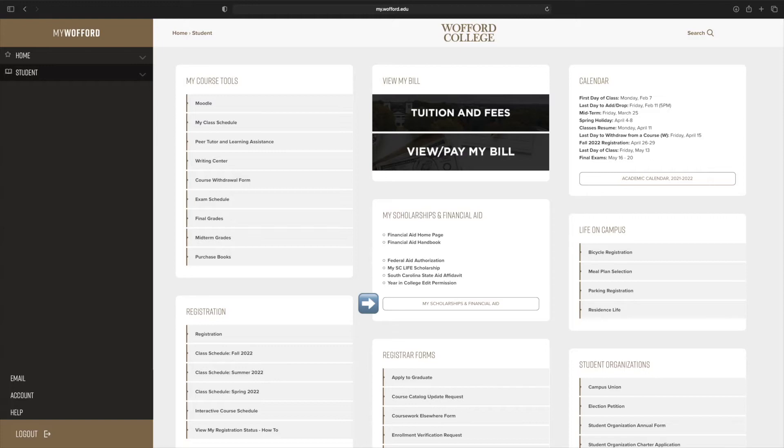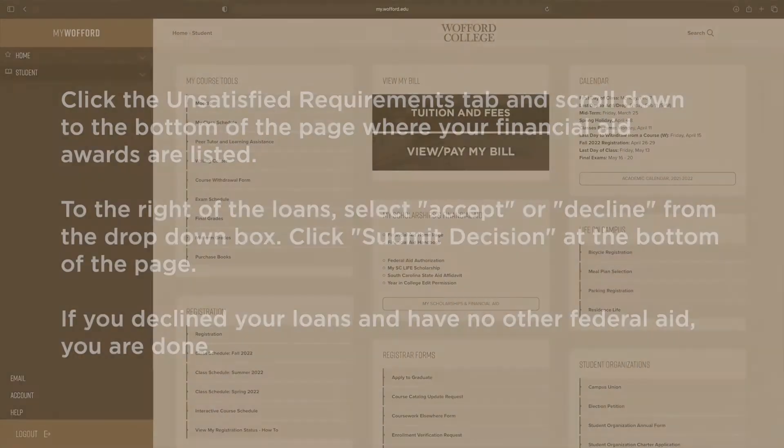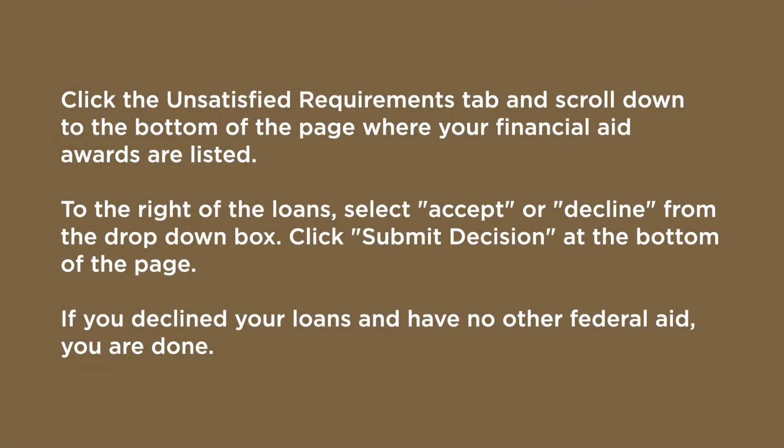Click the My Scholarships and Financial Aid button outlined in gold. Click the Unsatisfied Requirements tab and scroll down to the bottom of the page where your financial aid awards are listed.